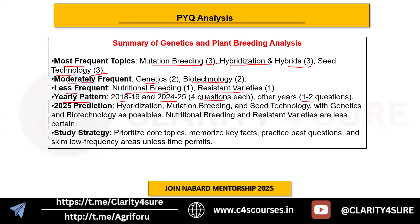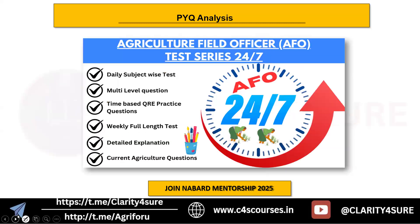For the 2025 prediction, the likely focus will be on hybridization, mutation breeding, and seed technology, with genetics and plant breeding as possible additions; nutrition breeding and resistant varieties are less certain. Study strategy: prioritize core topics, memorize key facts, practice past year questions to get familiarized with themes, and skim low frequency areas unless time permits. Good luck with your studies — thank you!